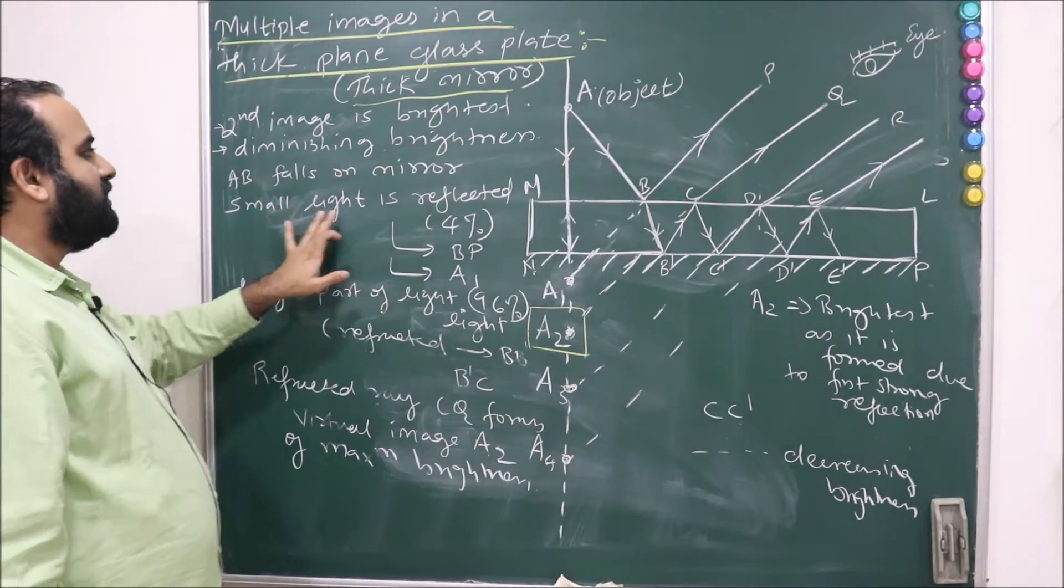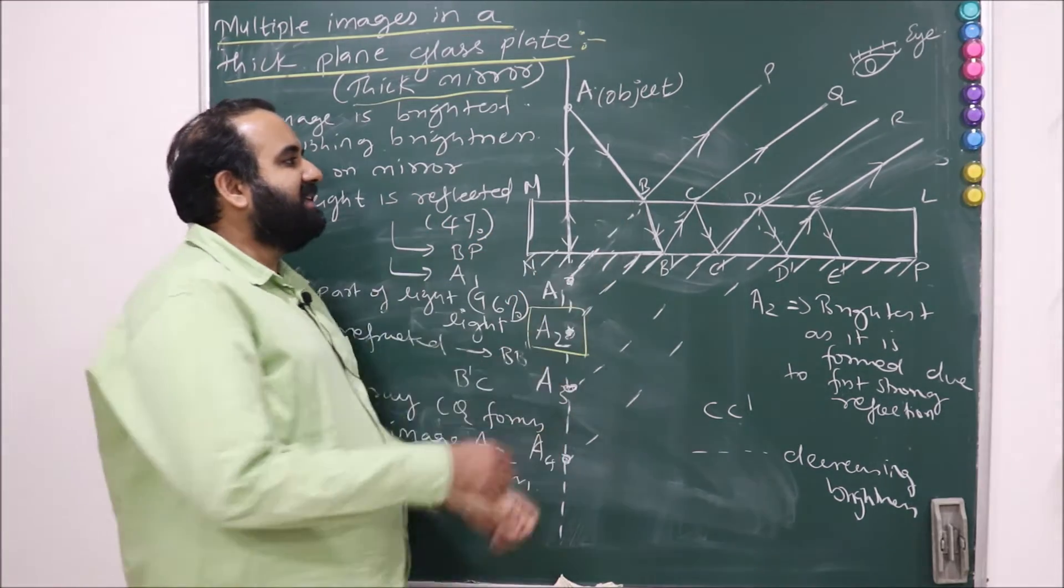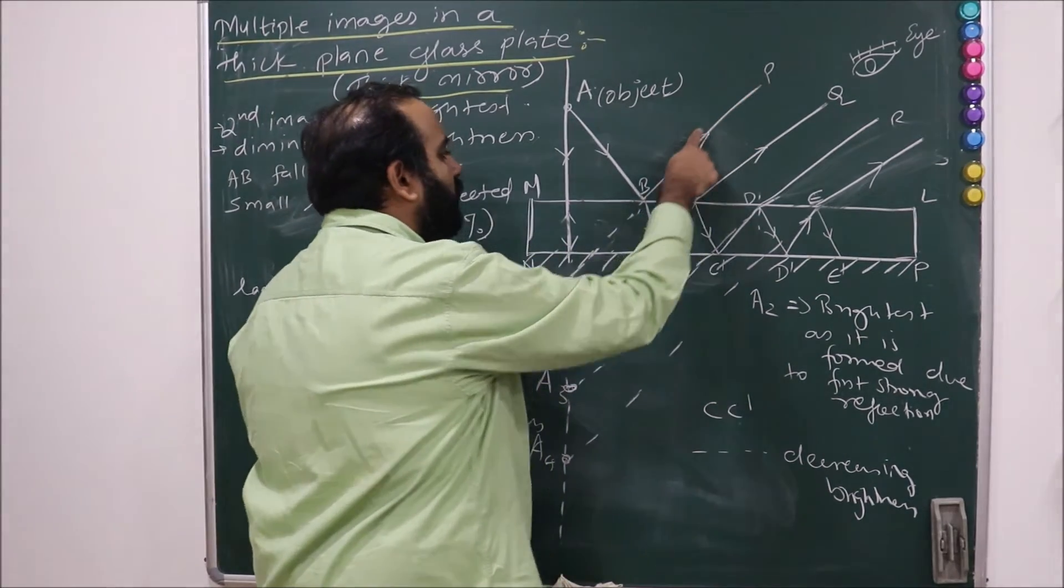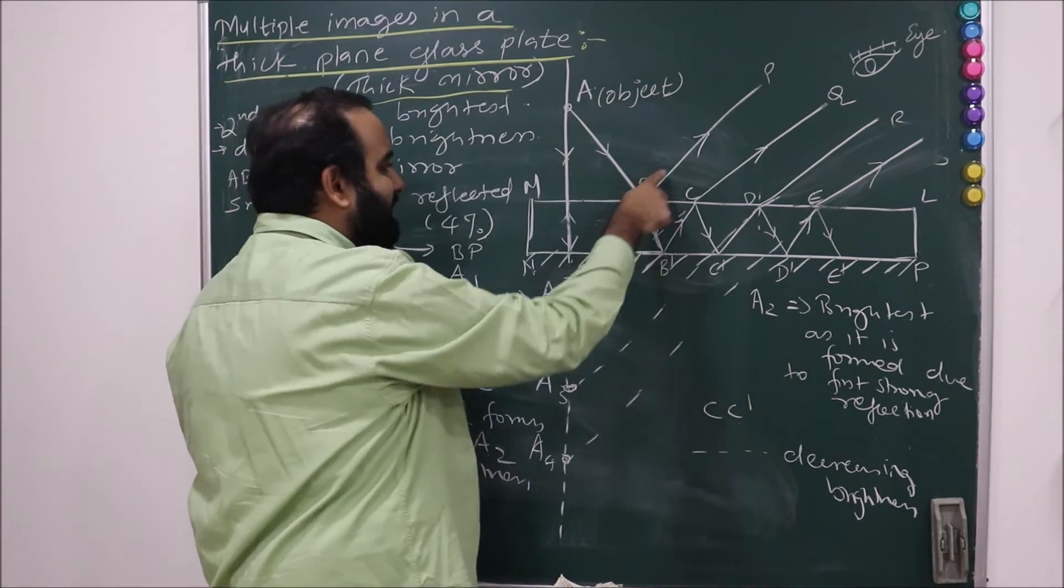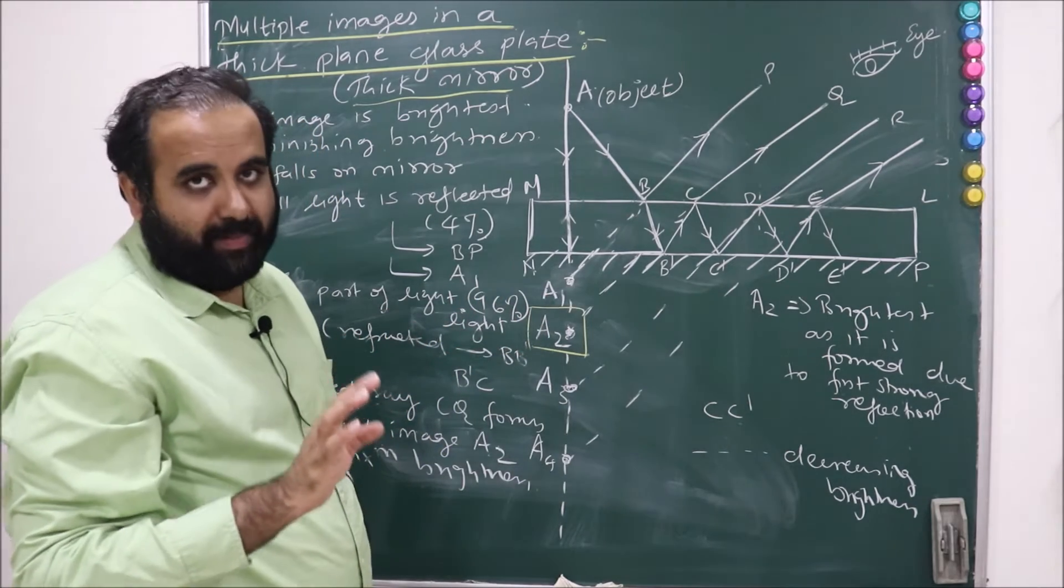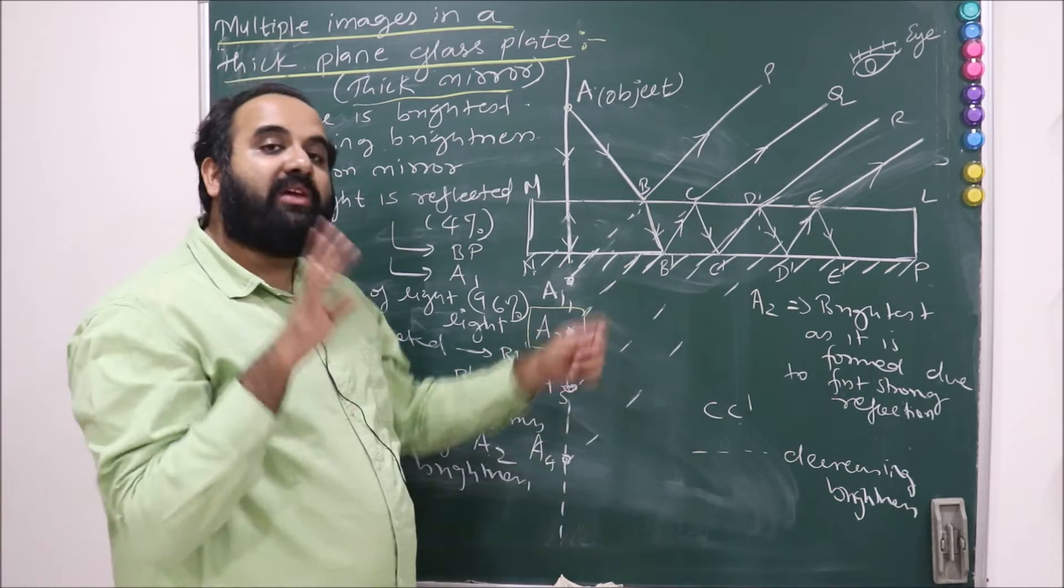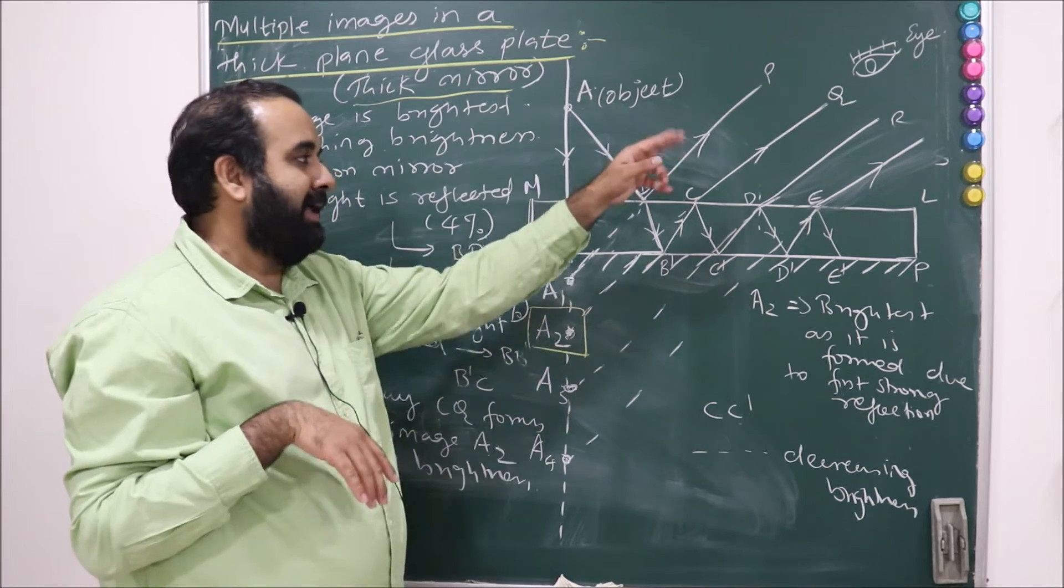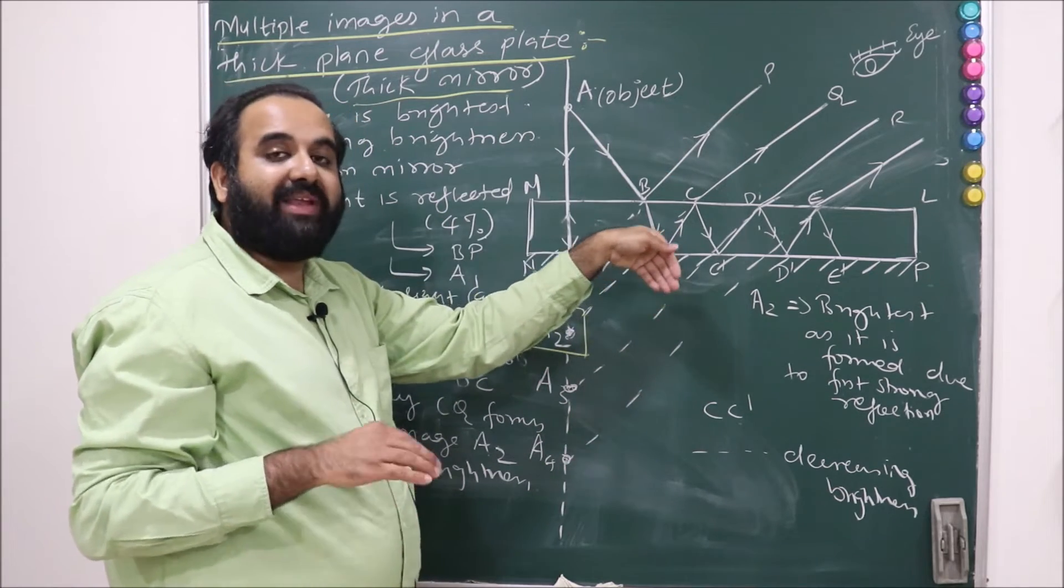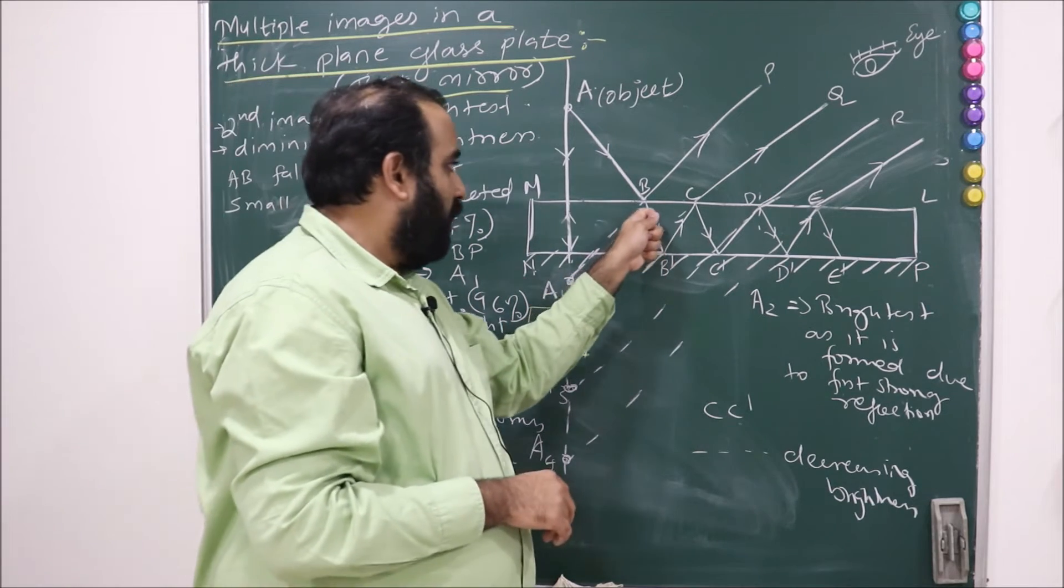So see, AB falls on the mirror. Small light is reflected, 4% along BP. Can you all see, from BP if you trace this line BP, the reflected ray in the backward direction, you are going to get an image A1. Now this is going to be a very faint image. Why? Because only 4% light has got reflected and 96% of the light has gone inside.